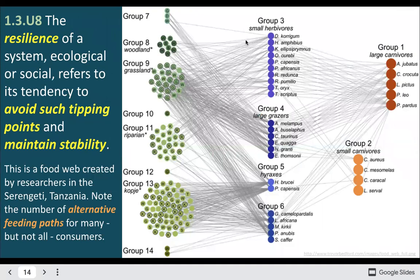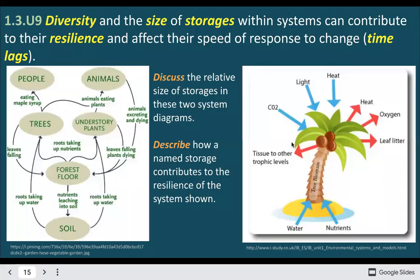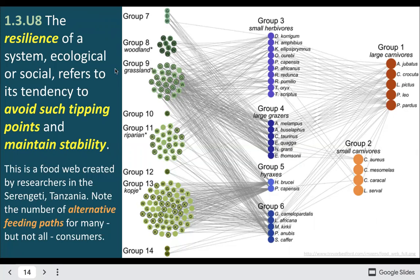In real life, food webs are even more complicated than most diagrams. Here's an example showing primary consumers — herbivores and grazers — secondary consumers, and tertiary consumers. The tertiary consumers eat both grazers and other carnivores. This includes the lion, Panthera leo, and the producers are the autotrophs — plants making their own food. You can also see different plant communities: grassland, woodland, and riparian areas near waterways.